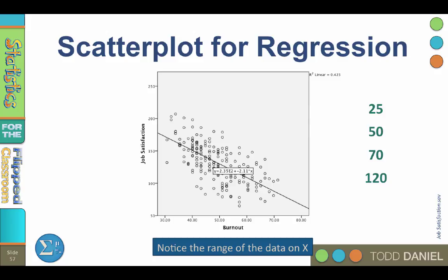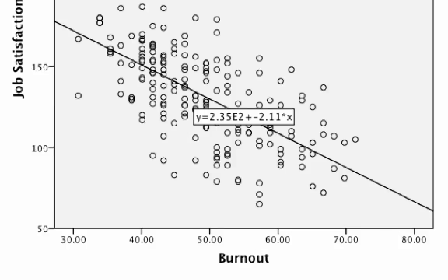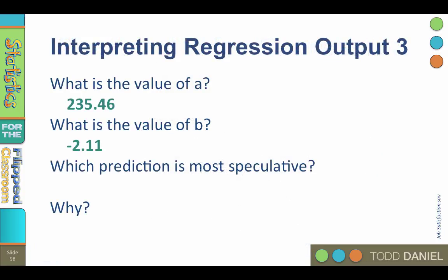Look at the range of data on the x-axis. What are the minimum and maximum values? It ranges from 30 to 80, but the data themselves go to about 72. So which of those predictions was most speculative? The most speculative prediction was 120, because 120 was predicting outside of the range. We are trying to predict a value that is not within the original data.